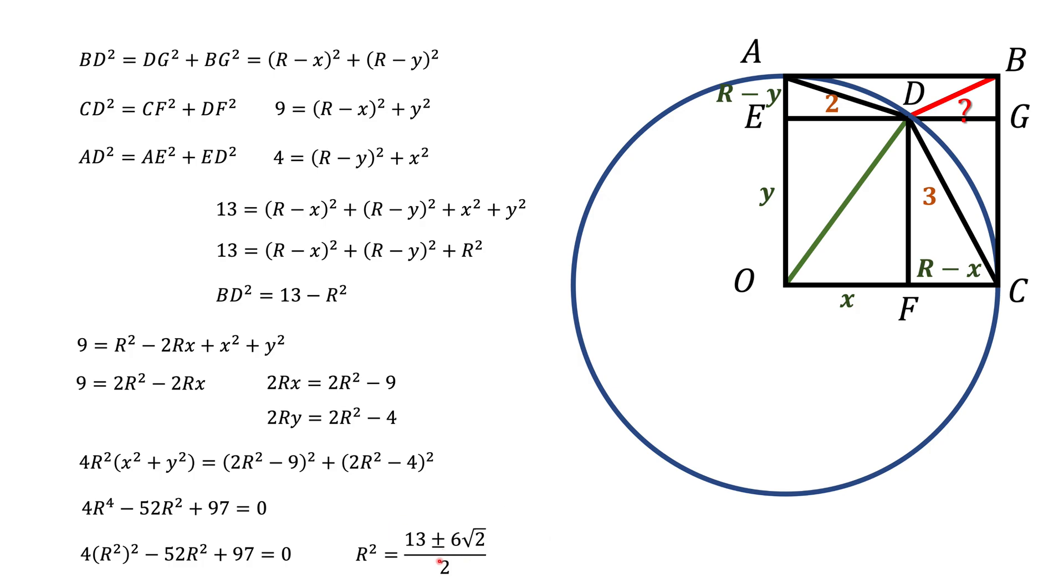And there are actually two solutions. And both solutions seem to be working fine because both solutions are positive. So if you plug this R squared into this formula, we get that BD squared should be equal to this. And that seems to be the final solution. We have actually not one solution, but two solutions.